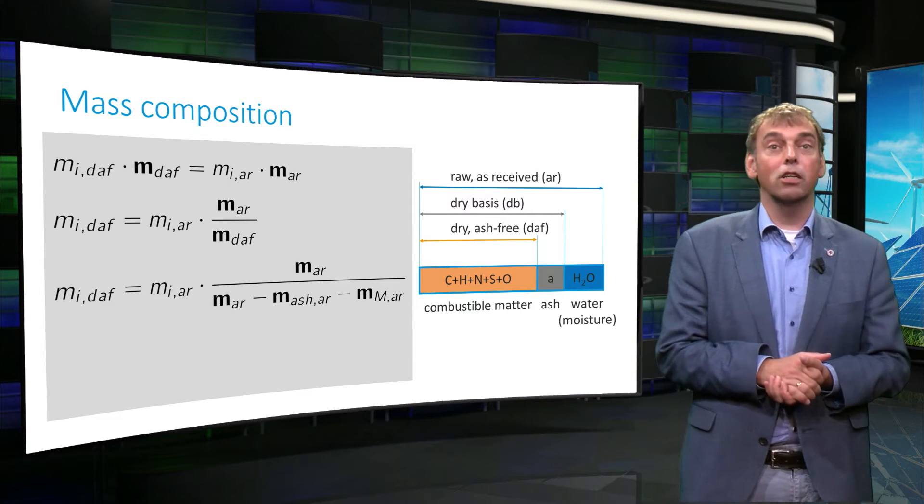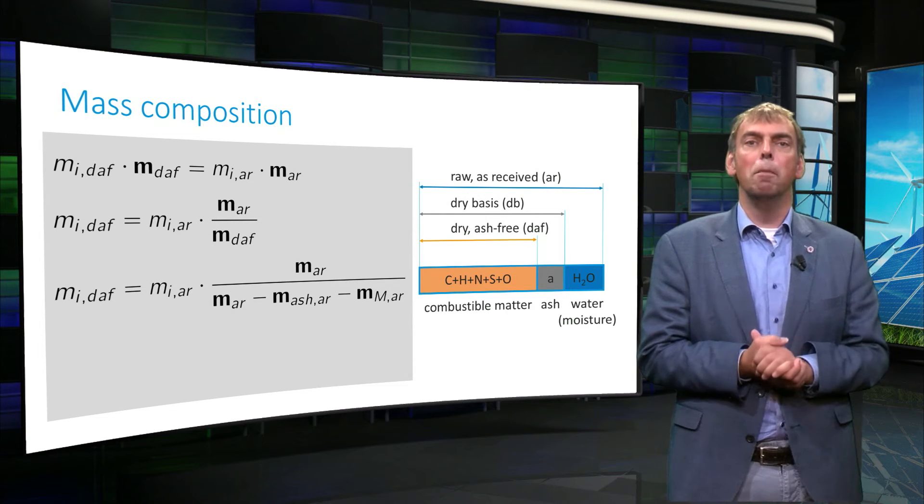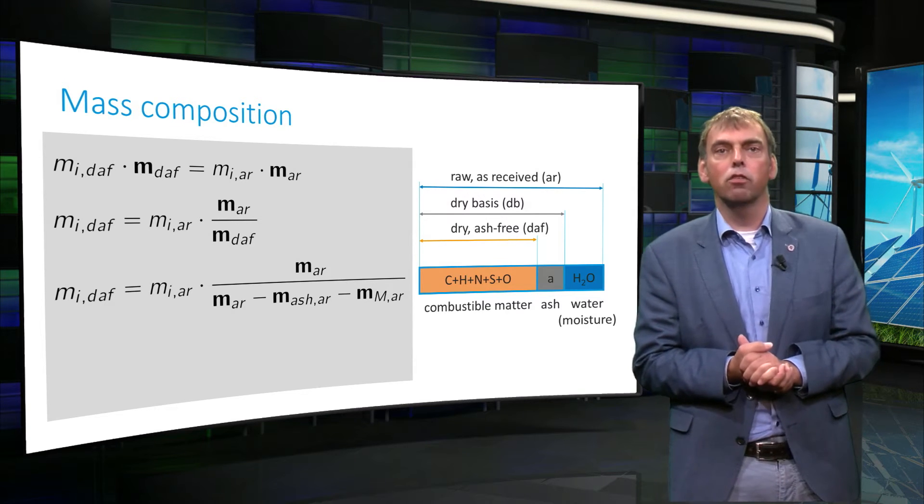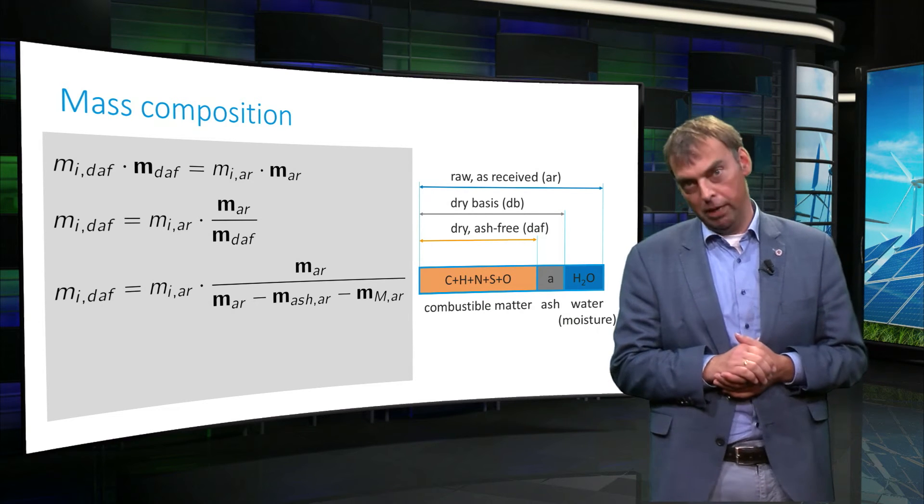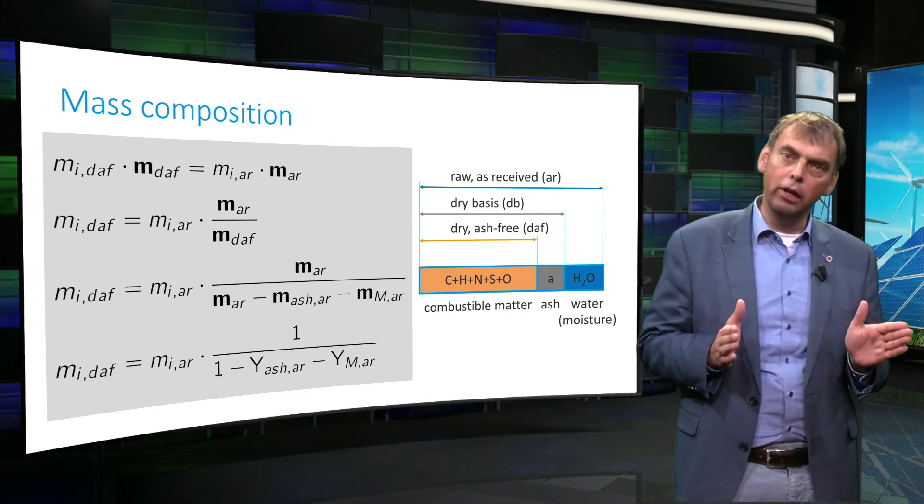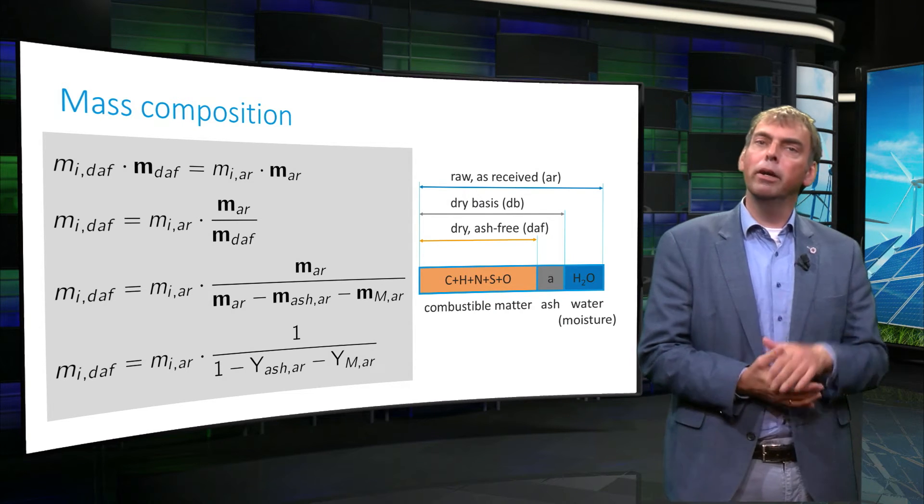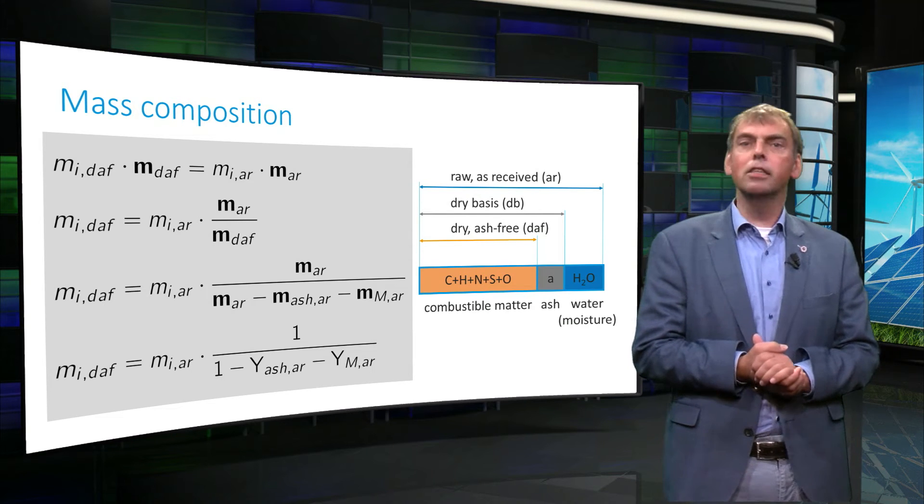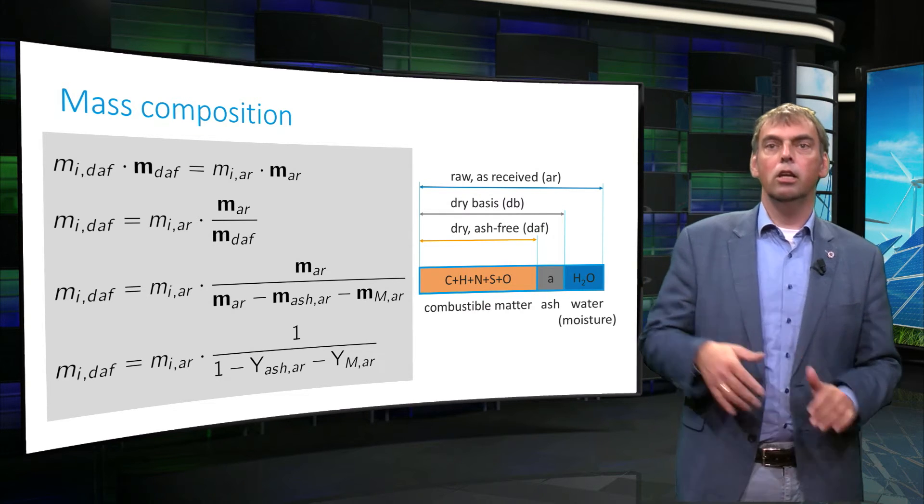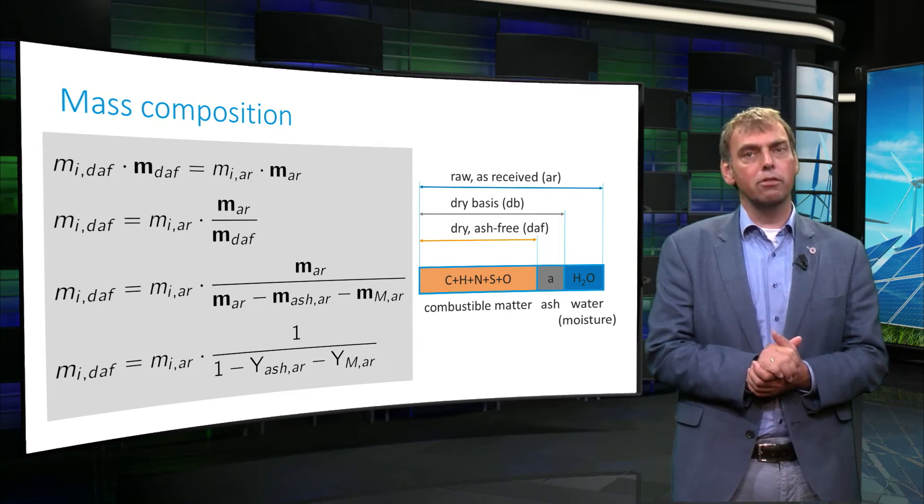Now, the mass of dry and ash-free matter is equal to the mass on as-received basis minus mass of ash and mass of moisture, both counted on an as-received basis. Finally, we can divide the numerator and denominator by the total mass of as-received matter. This gives this equation, in which y values are mass fractions on an as-received basis.